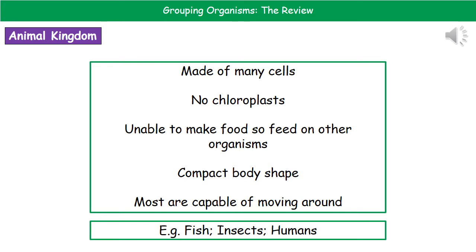The second kingdom is the animal kingdom. The features that all organisms within the animal kingdom have are: they're made of many cells, they do not have chloroplasts present within those cells, they're unable to make their own food so they have to feed on other organisms, they've got a compact body shape, and most are capable of moving around. Examples include fish, insects, and humans, but there are obviously many more.